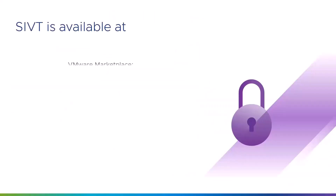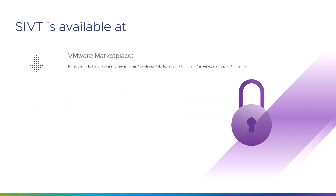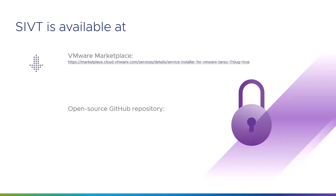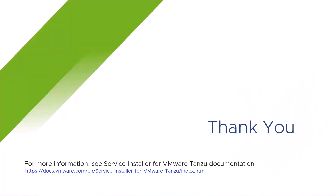You can download SIVT from VMware Marketplace. SIVT is an open source tool with a public repository on GitHub — you can fork it and adopt it for your use case. For more information, see the Service Installer for VMware Tanzu documentation on docs.vmware.com. Thank you.